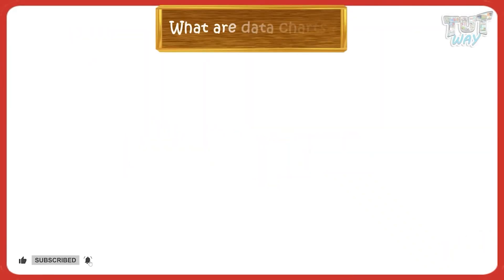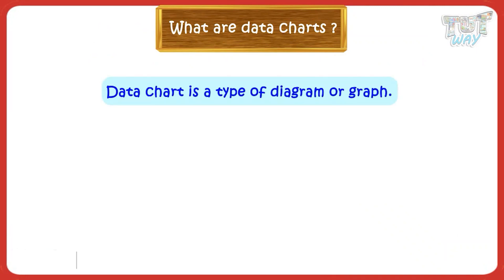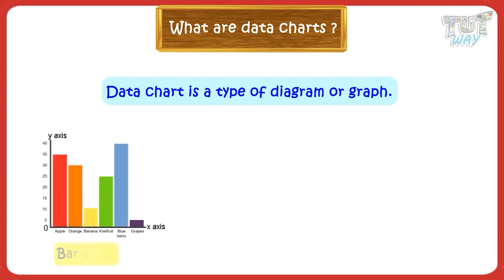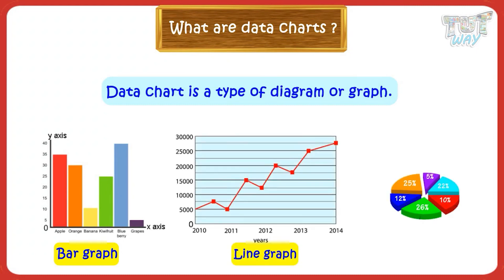What are data charts and why do we use them? A data chart is a type of diagram or graph where data is represented by various symbols, such as bars in a bar graph, lines in a line graph, or slices in a pie chart. Charts make it easy to understand large quantities of data and the relationship between parts of data. Data given in the form of charts is read more quickly. There are different types of data charts.